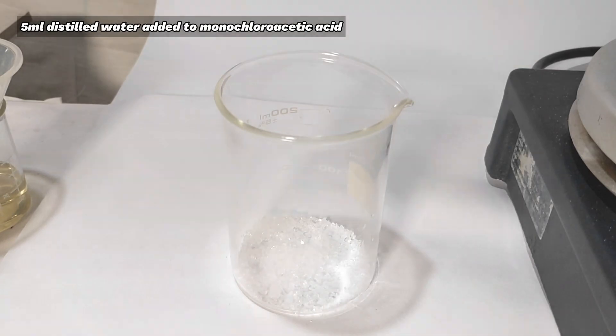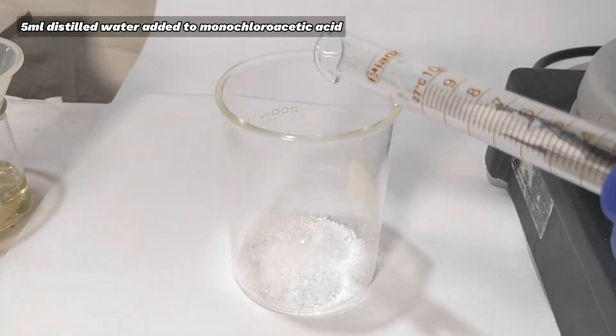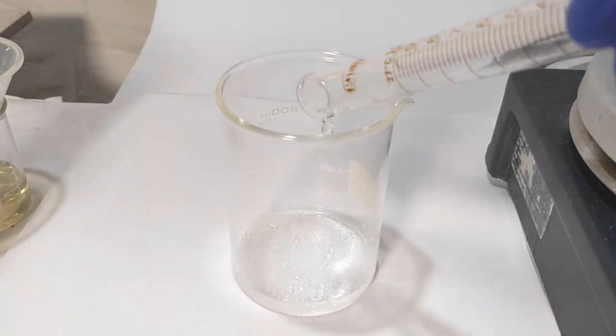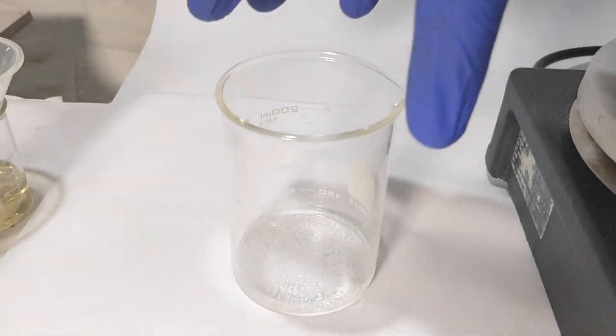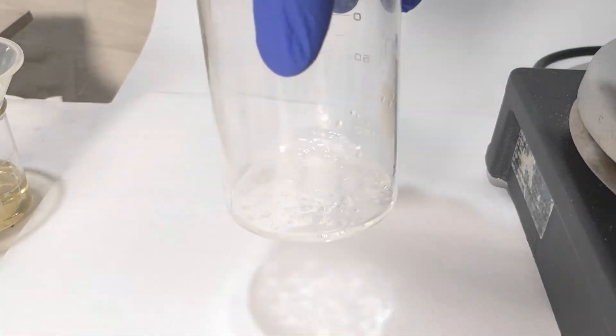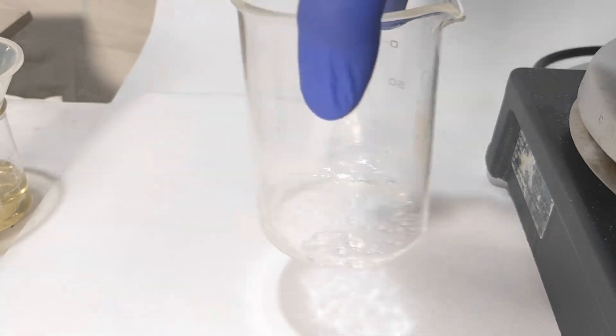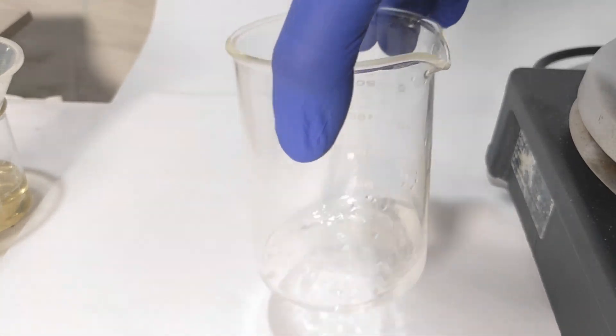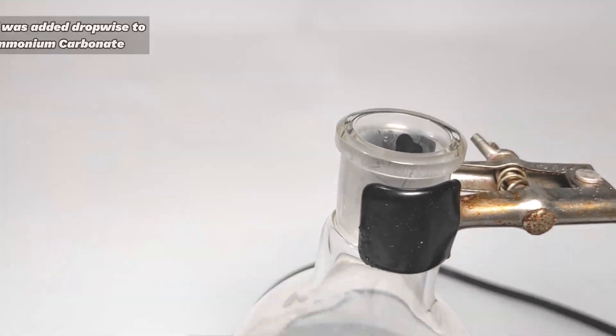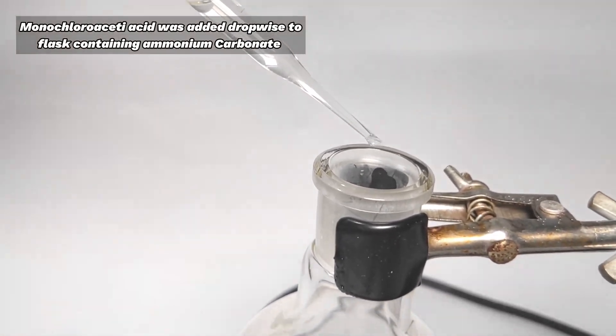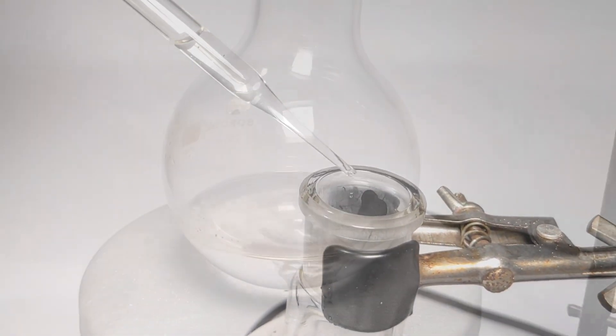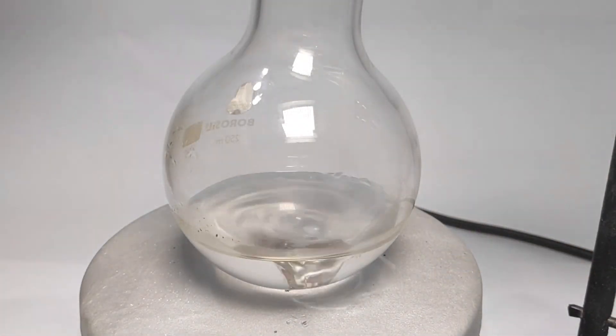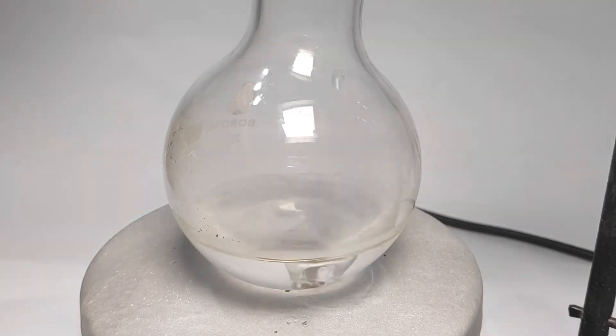5 milliliters of distilled water was added to the beaker containing monochloroacetic acid. The beaker was swirled gently and the compound easily gets dissolved in it. Using a pipette, monochloroacetic acid was added drop-wise to the flask containing ammonium carbonate. The flask was stirred throughout the addition. Dense white fumes of ammonium chloride was produced.